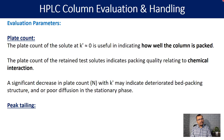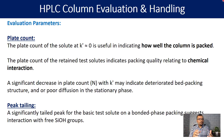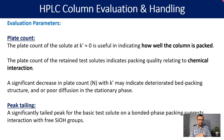Peak tailing is also one of the very important parameters. A significantly tailed peak for the basic test solute on a bonded phase packing suggests interaction with free silanol groups. This is a secondary interaction that generally takes place between deprotonated silanol and protonated basic compound. This interaction is not preferred because it always brings tailing to the peak. If the silanol effect is increasing, that will be reflected in increased tailing for the basic compound. Peak tailing therefore needs to be evaluated during column performance testing.